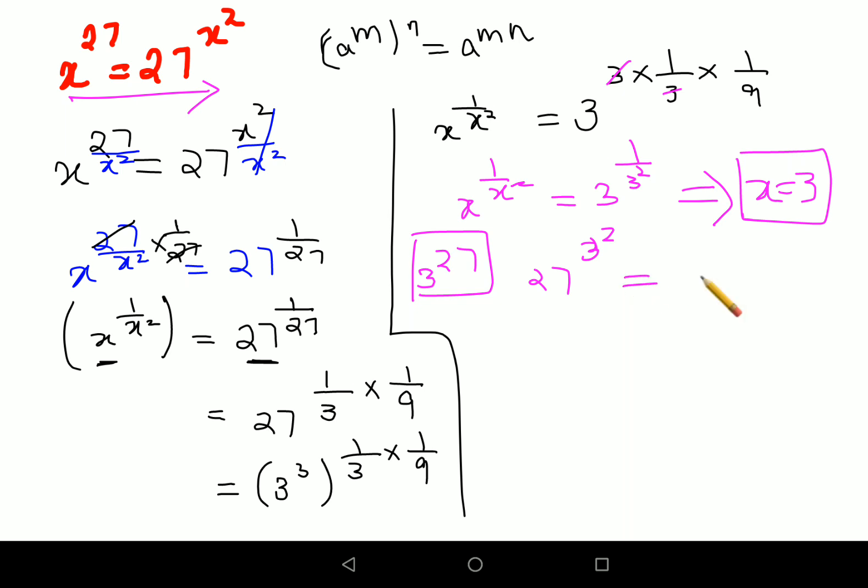This 27 can be written as 3 raised to 3 the whole raised to 3 square, which is nothing but 9. Using the same law of indices, I can multiply the indices in this case. So we have 3 raised to 3 into 9 that gets you 27. And that if you see was your LHS as well. Therefore I can say the answer for this particular question is x equals to 3.